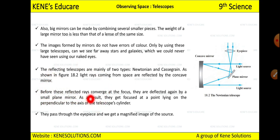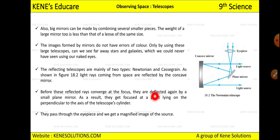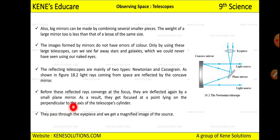Before the reflected rays converge at the focus, they are deflected again by a smaller plane mirror. The rays converge and then get deflected again from the plane mirror. They get focused at a point lying perpendicular to the axis of the telescope cylinder, creating a perpendicular arrangement of the light path.